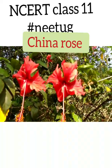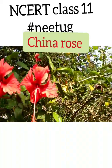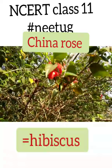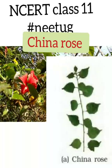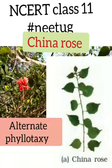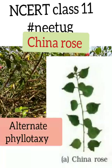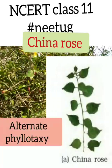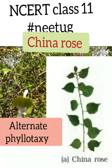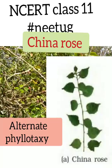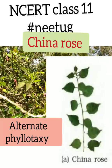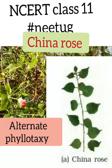China rose is also called hibiscus. Phyllotaxy is the arrangement of leaves. China rose has alternate phyllotaxy, which means a single leaf arises at each node in an alternate manner.